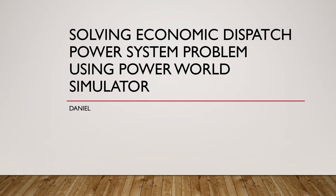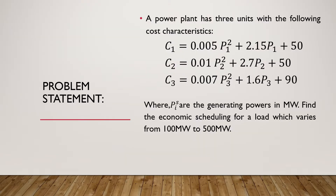In this video I am going to demonstrate how to use Power World Simulator to solve an economic dispatch problem in power systems. I take a problem of a simple power station using three generators to supply power to a variable load. The cost characteristic equations of the three generating units are given, and the power station supplies power to a variable load which varies from 500 megawatt to 100 megawatt in steps of 50 megawatt.